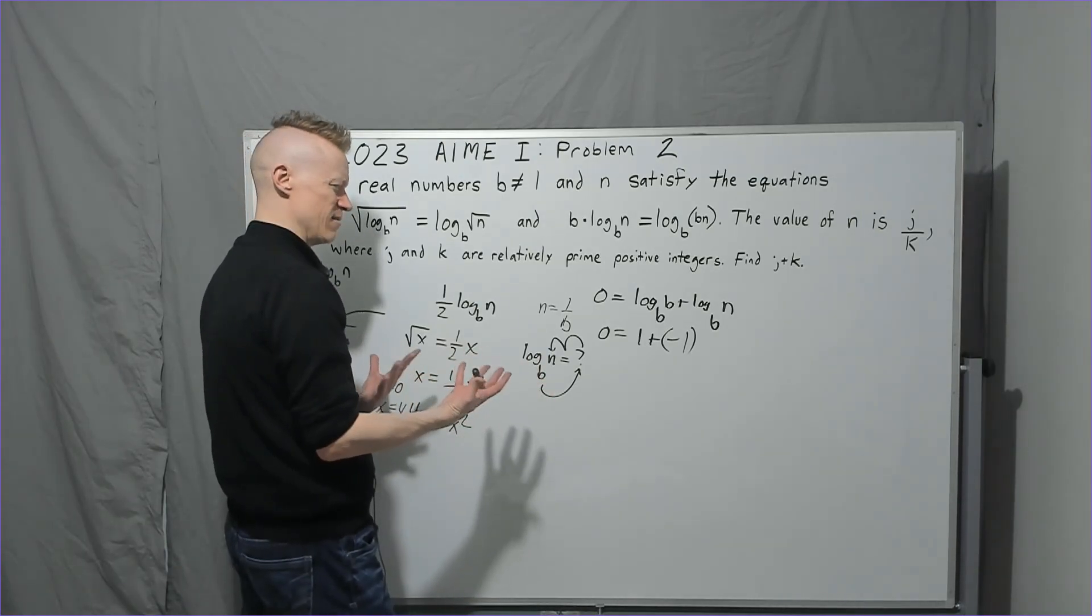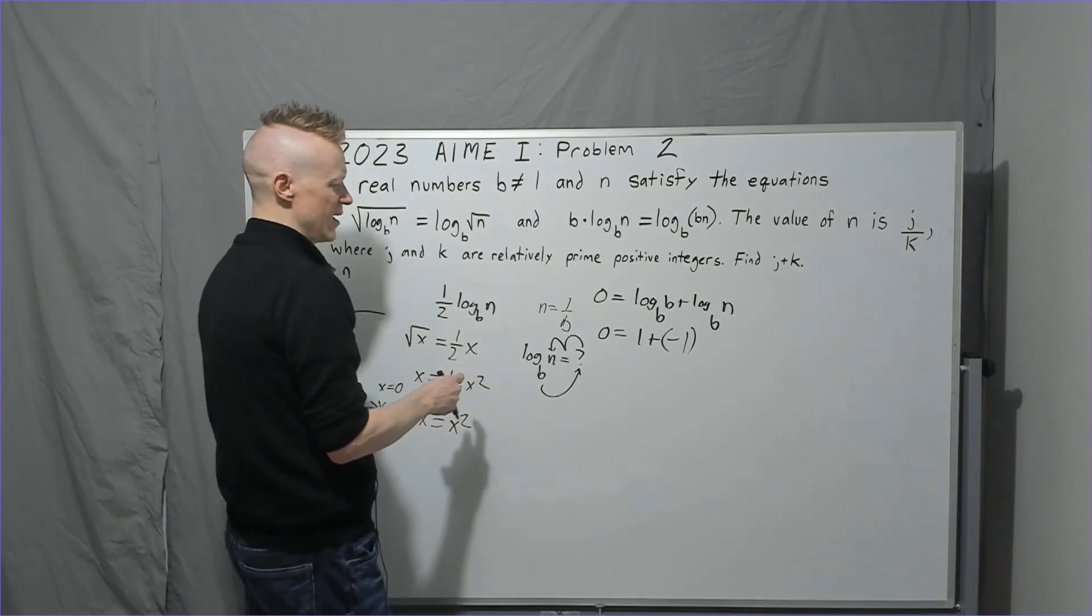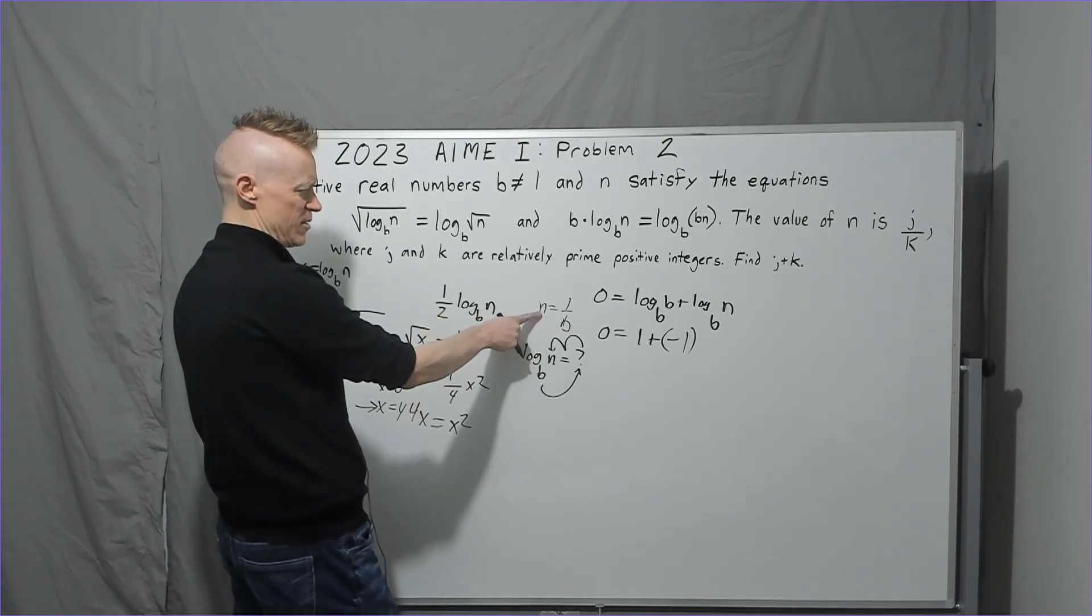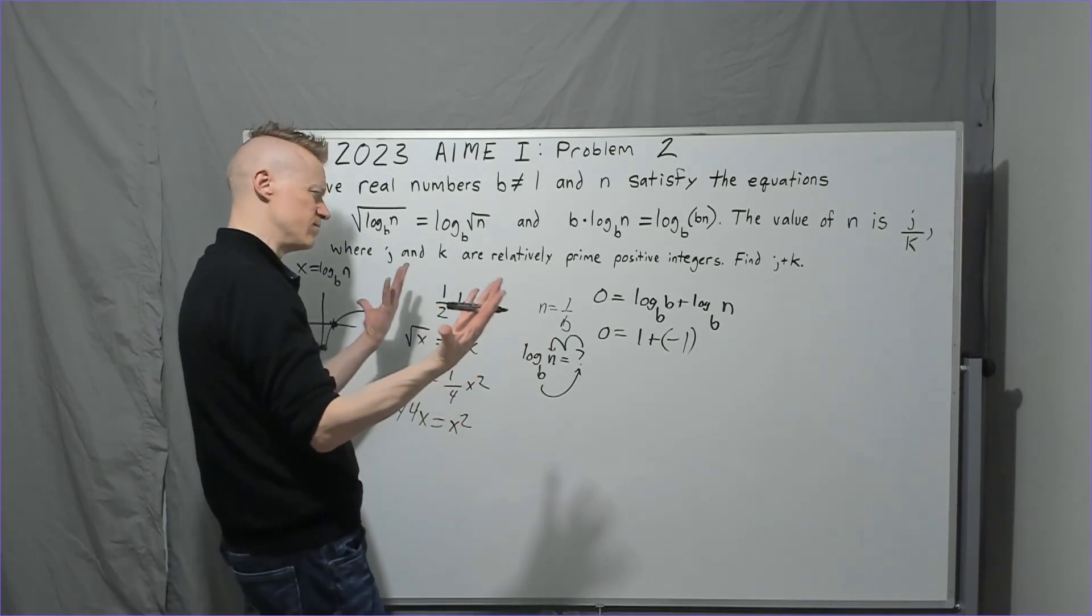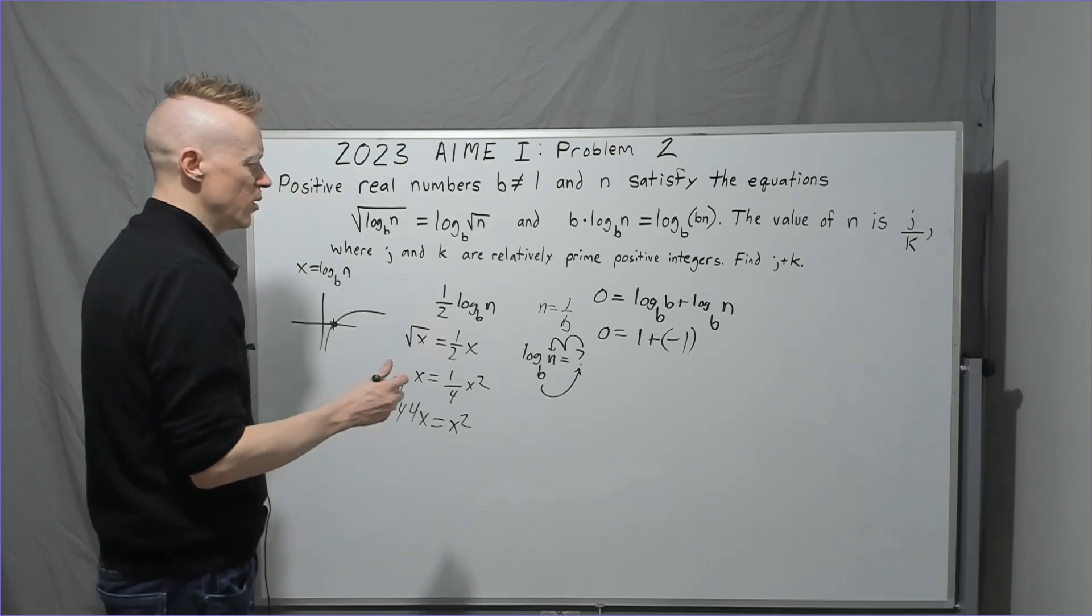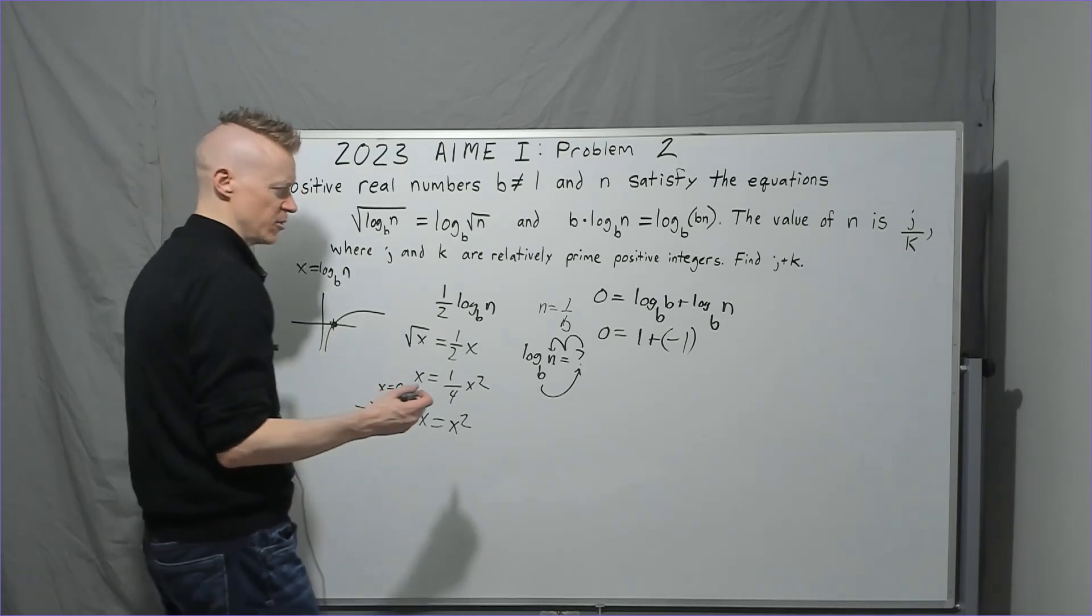So that would mean you have problems, because b is zero, don't forget. So n would have to equal one over zero. It's not going to work out. So what we'll do instead is we'll just take it to be four. Not so bad.